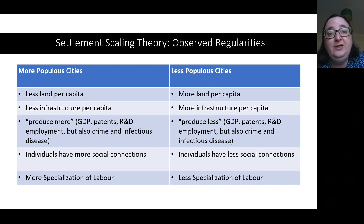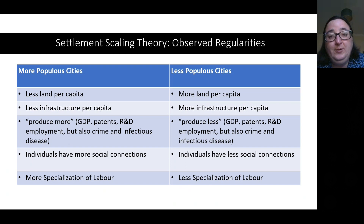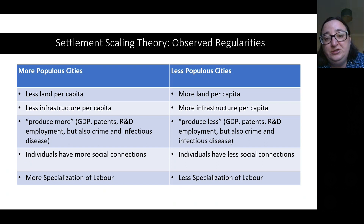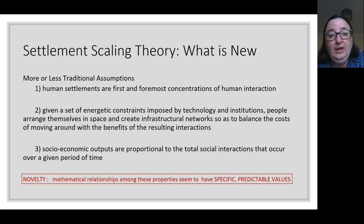Scholars who study urbanism, and particularly those who use settlement scaling theory, have observed some recurring regularities in urban society. More populous cities have less land per capita but produce more GDP, with individuals having greater specialization of labor. Less populous cities have more land per capita and more infrastructure per capita, but produce less, with individuals having less connection and less specialization of labor.